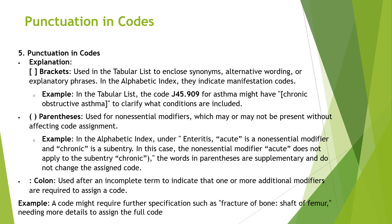Parentheses appear alongside a condition with sub-entry terms such as 'acute' or 'chronic,' but the word in parentheses will not change the assigned code. Colons are used to indicate incomplete codes — when you see a colon, the code requires additional characters to be complete.